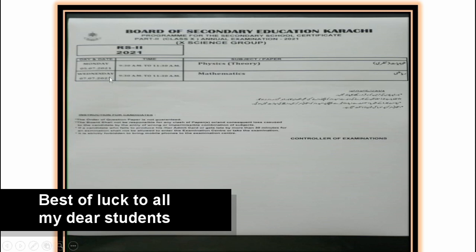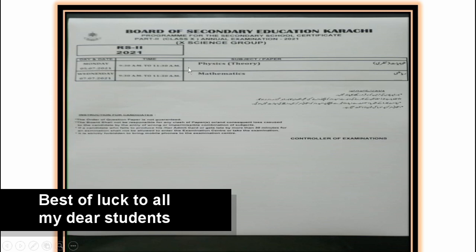This is the date sheet of Class 10. Your first paper is on Monday, 5th July 2021, from 9:30 to 11:30 — and this is the Physics theory paper. Then on Wednesday, 7th July, with just one day gap, same timing of two hours — this is the Mathematics paper, which I discussed with you as a model paper.